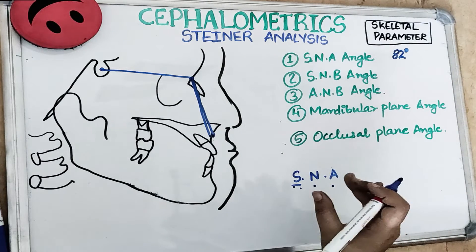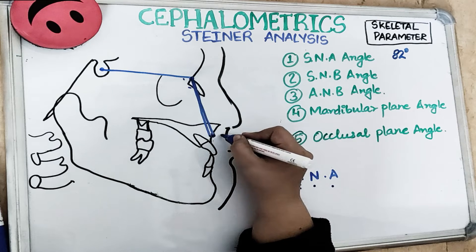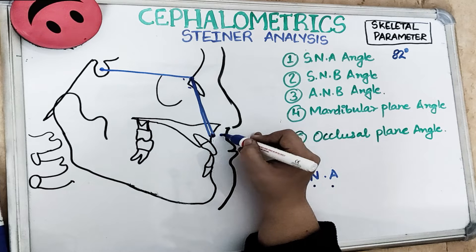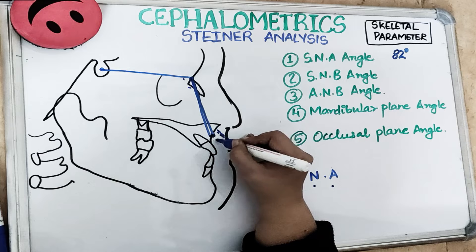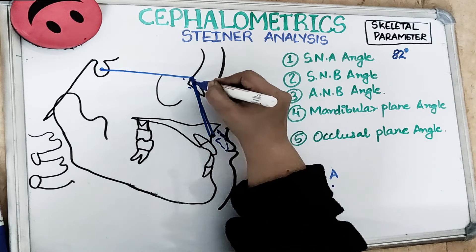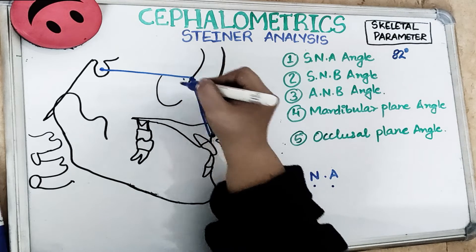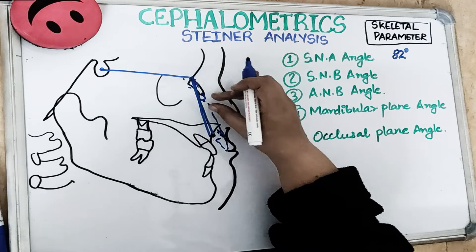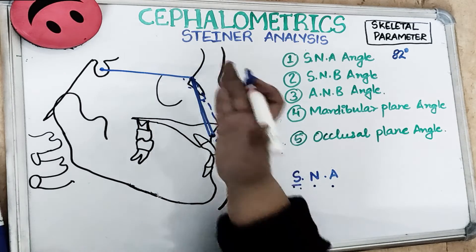The SNA value increases if point A shifts forward. For example, in a prognathic maxilla or skeletal class 2 malocclusion, point A is positioned ahead of normal, so the SNA angle is increased beyond 82 degrees. In class 3, this angle is decreased since the maxilla is retrusive.